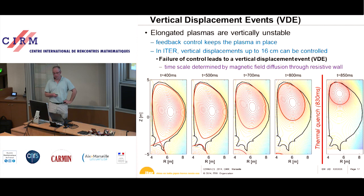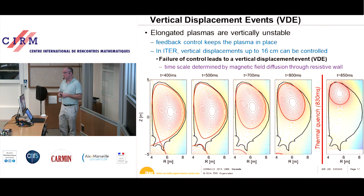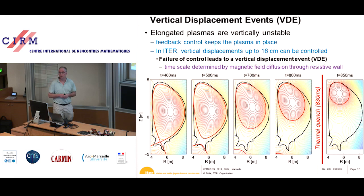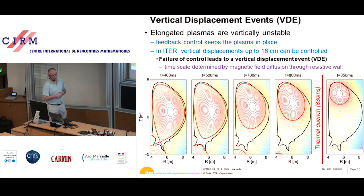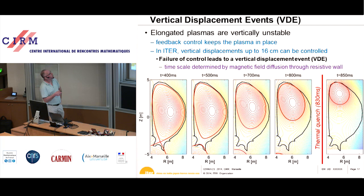A particular type of disruption is the vertical displacement event (VDE). Any plasma elongated in a toroidal system, like a normal ITER plasma, is vertically unstable. During the 500 seconds of operation it needs to be kept in position with active steering of the magnetic field coils. But there are limits to the control system: in ITER, if the plasma moves up by more than 16 centimeters, we lose control, and the plasma then moves by itself.